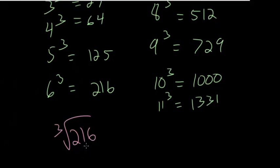Is this 2 cubed? No, that's 8. Then you go to 3 cubed, which is 27, and you just keep going up the list until you get to the correct one. Since 6 cubed is 216, the cube root of 216 would simply be equal to 6.